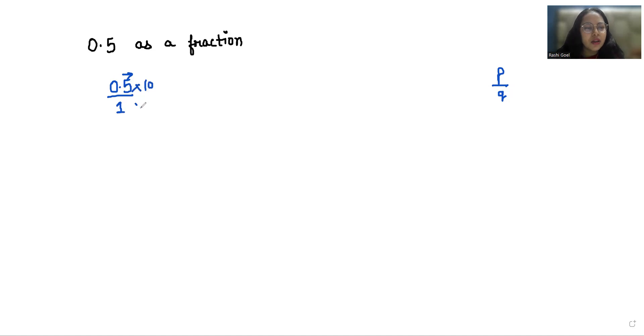in numerator as well as in denominator. So the numerator becomes 5 and denominator becomes 10. So this is a fraction form. Now we are going to reduce it. Both numerator and denominator are completely divisible by 5, so we are going to divide with 5 in numerator and denominator. So it gave us 1 by 2. So we can